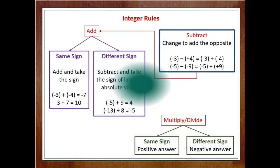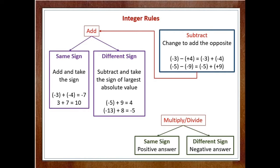Next is the rules of integers. In the case of addition, when both the integers have the same sign, we simply add them and take the common sign. When the signs are different, we simply subtract them and take the sign of the largest absolute value.